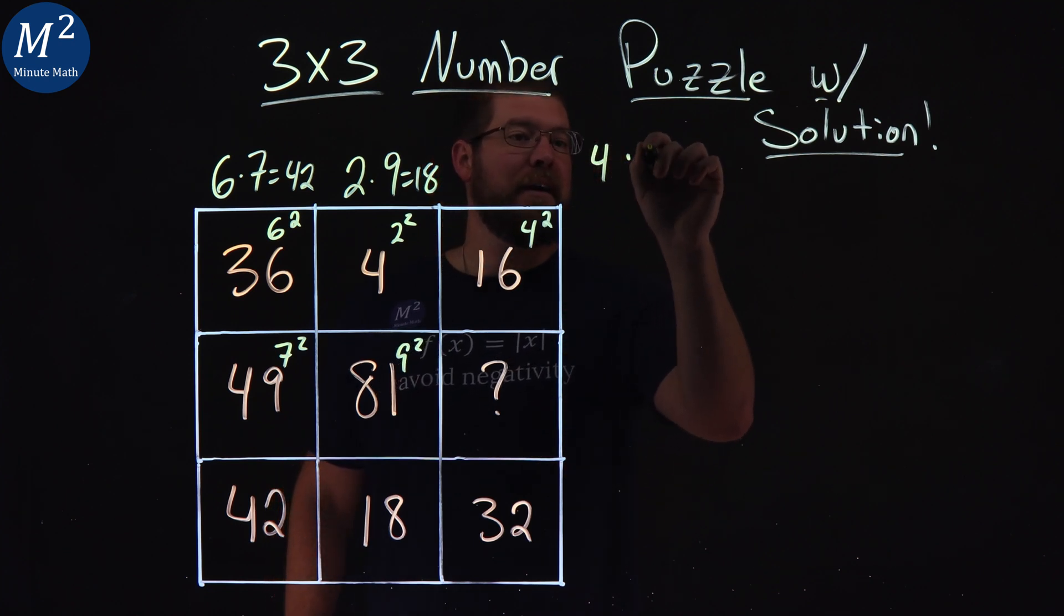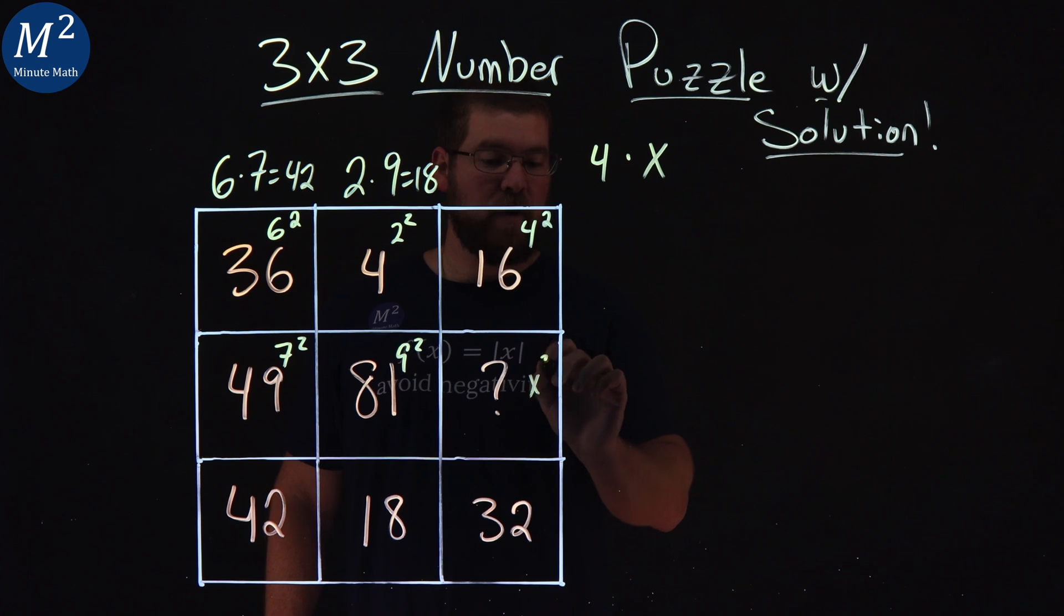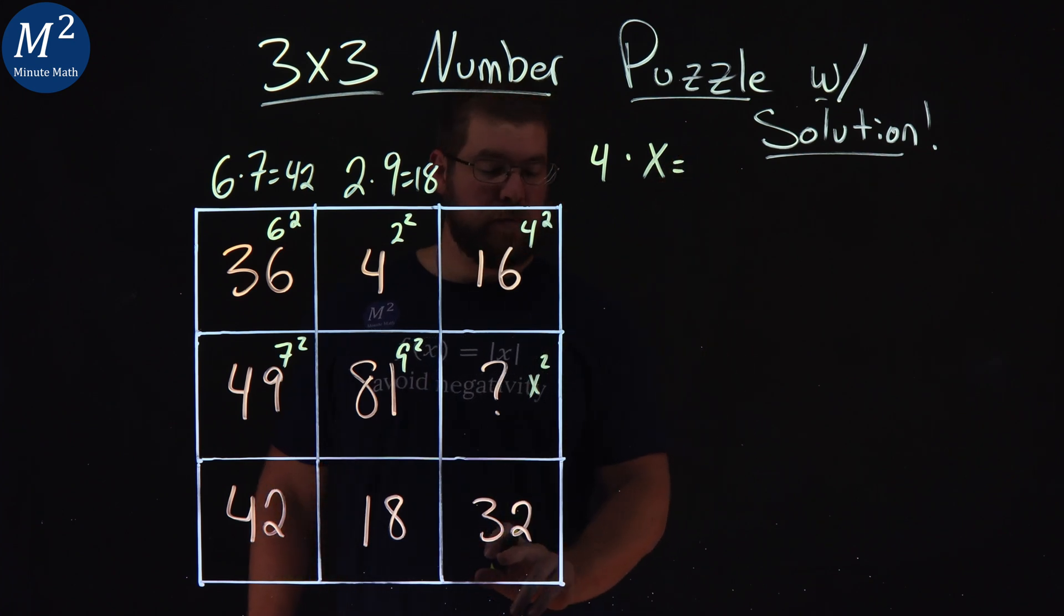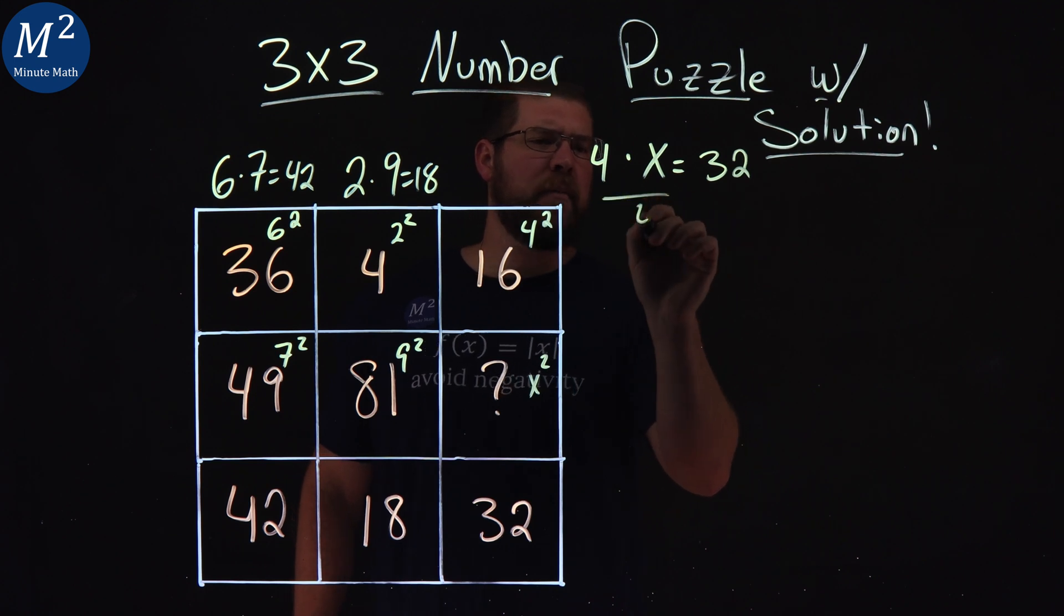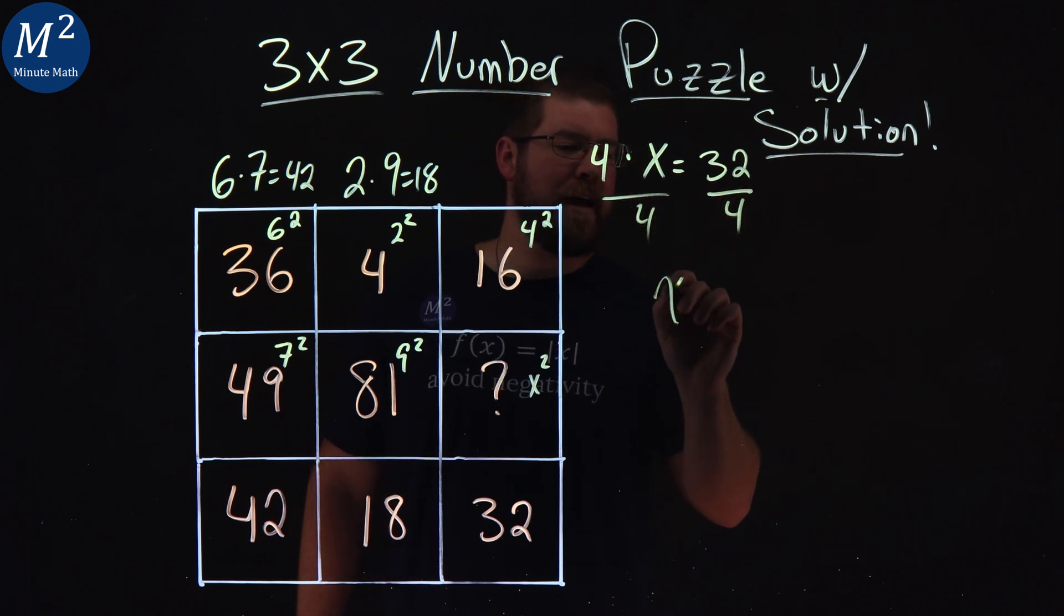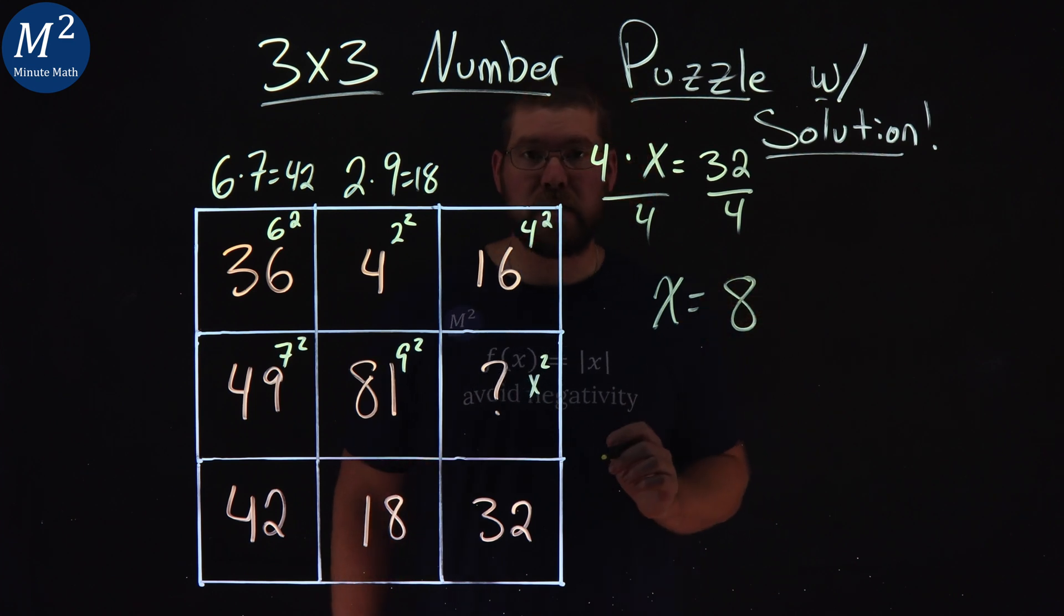4 times x, let's say, and this is going to be an x squared number, is equal to that 32. Well, that's pretty easy. Divide both sides by 4 here. x equals 32 divided by 4, which is 8.